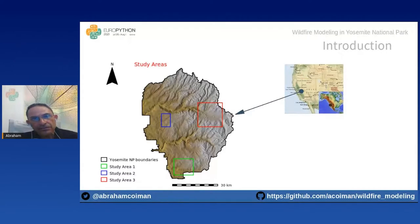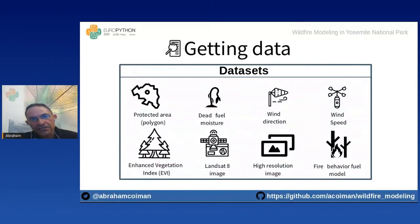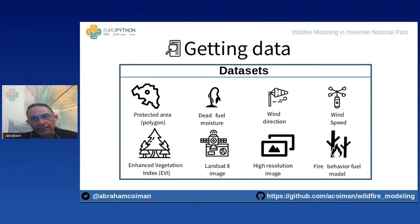We model wildfire events in Yosemite National Park, located in California, USA. Simulations are performed in three areas during the summer season of 2020, from June through September. The initial geospatial datasets needed include: the park polygon, vegetation moisture content, wind direction and speed, canopy variation via Enhanced Vegetation Index (EVI), Landsat imagery as basemaps, and a fuel model defined by the U.S. Forest Service.